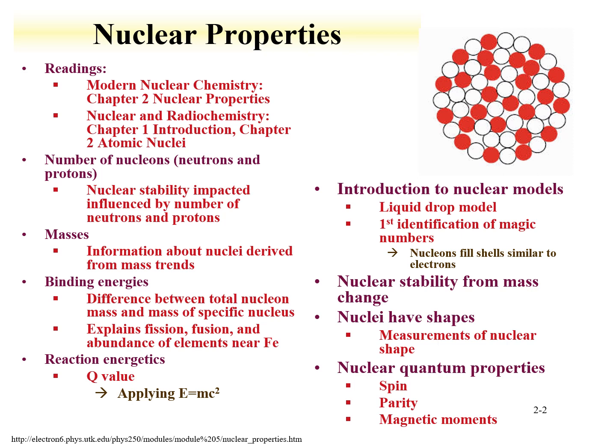We're going to explore a term called binding energy, which is the difference in the total nucleon mass and the mass of a specific nucleus. For example, the helium nucleus has two neutrons and two protons. One would think that the mass of the helium nucleus is just the sum of two neutrons and two protons. We're going to see that that is not the case. Binding energy will also be used to explain fission, fusion, and abundance of elements near iron. We're going to talk about reaction energetics and apply E equals mc squared—changing mass goes into energy, or changing energy into mass.